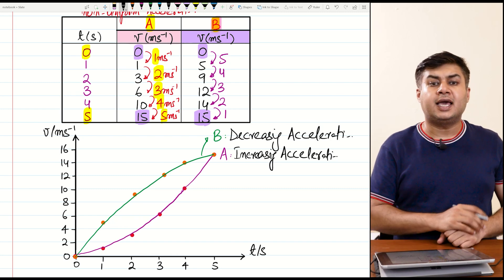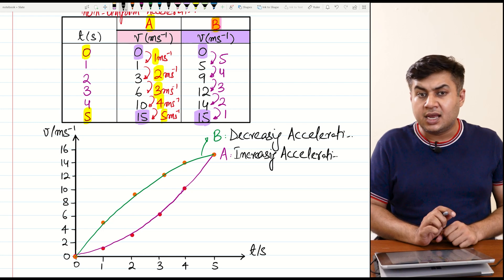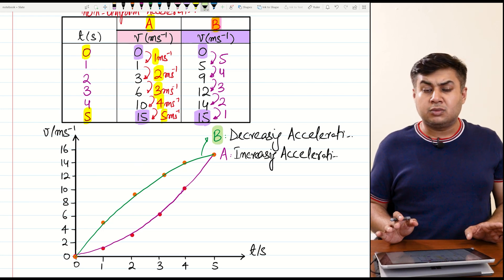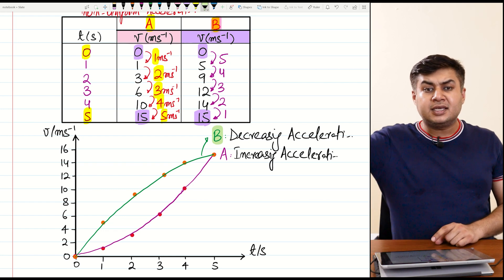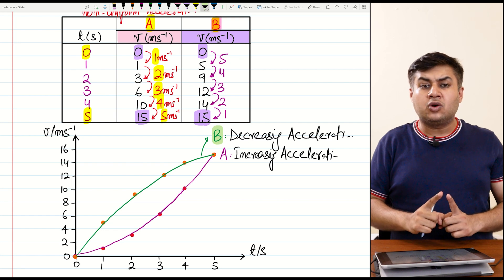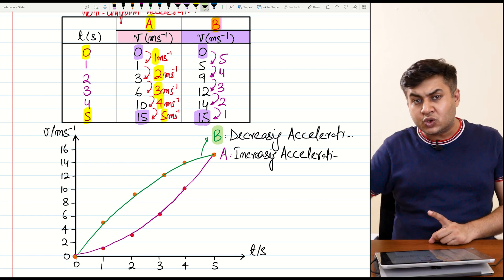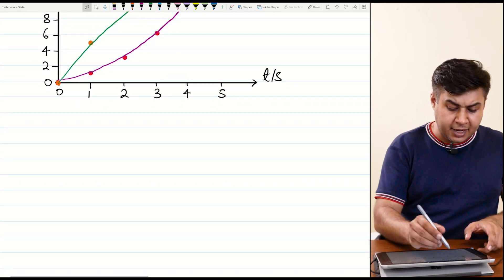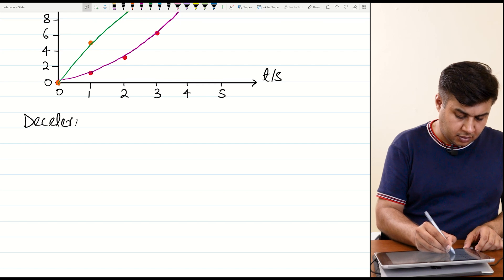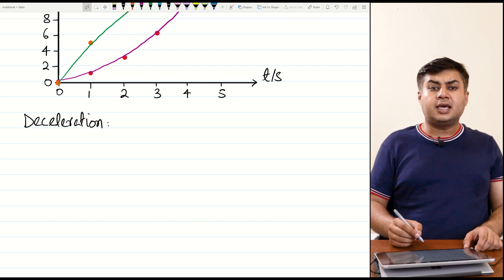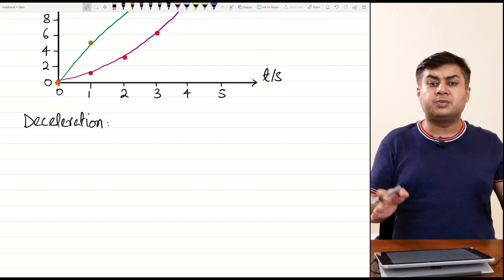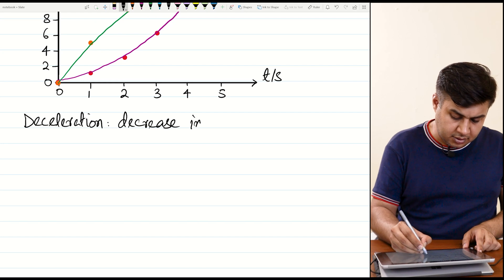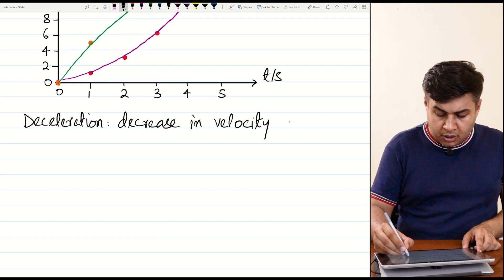But neither of these is deceleration. Students often mistakenly call the graph of object B deceleration — it is not, because the speed is still increasing. Deceleration only starts when the object's speed begins to reduce with respect to time. So now let's write about deceleration.